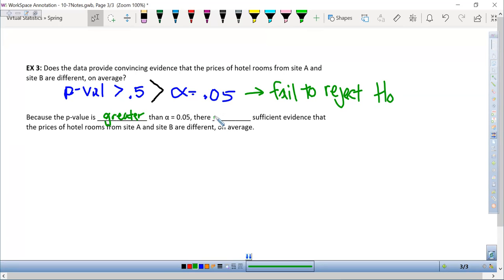which means there is not sufficient evidence that the price in hotel rooms from site A to B are different on average.